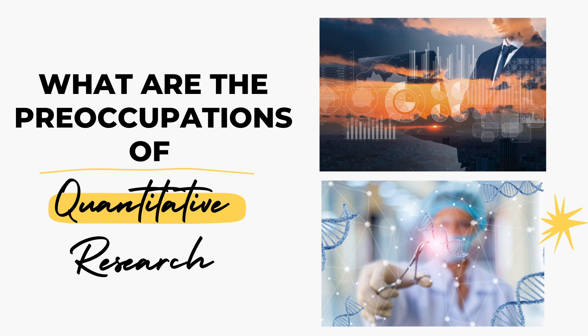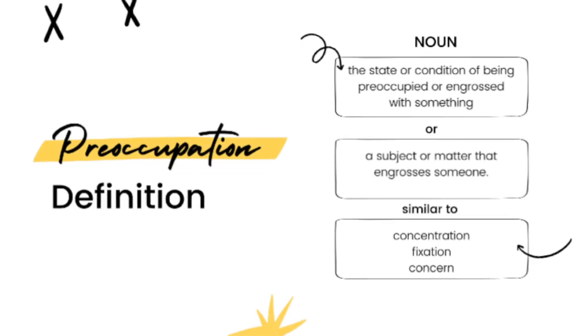In this short video, we will answer the question: what are the preoccupations of quantitative research? But before we start, let us first define preoccupation. It is a noun that means a state or condition of being preoccupied or engrossed with something, or it can be a subject or matter that engrosses someone. It is similar to concentration, fixation, or concern. Therefore, preoccupations of quantitative research are the things that researchers are concerned, focused on, or must-haves in their research paper or the entire research process.